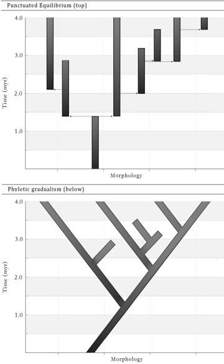Punctuated equilibrium originated as a logical consequence of Ernst Mayr's concept of genetic revolutions by allopatric and especially peripatric speciation as applied to the fossil record. Although the sudden appearance of species and its relationship to speciation was proposed and identified by Mayr in 1954, historians of science generally recognize the 1972 Eldredge and Gould paper as the basis of the new paleobiological research program. Punctuated equilibrium differs from Mayr's ideas mainly in that Eldredge and Gould placed considerably greater emphasis on stasis, whereas Mayr was concerned with explaining the morphological discontinuity found in the fossil record.